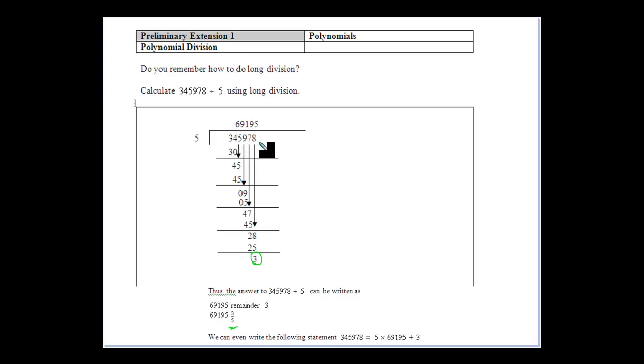We can write it with decimals as well, so you put a decimal point and then put zeros in and keep going. So you get a point zero, bring the zero down, 5 goes into 30 six times, and then we'd be in business, we'd be able to write it as 0.6.